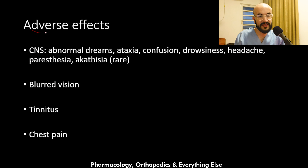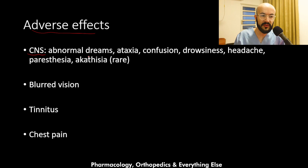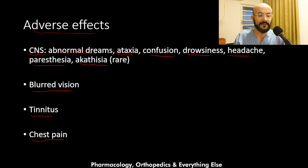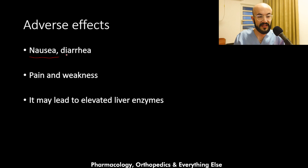Regarding adverse effects, buspirone may lead to central nervous system side effects, which include abnormal dreams, ataxia, confusion, drowsiness, headache, paresthesia, and rarely akathisia. It may also lead to blurred vision, tinnitus, chest pain, nausea or diarrhea, pain and weakness, and elevated liver enzymes.